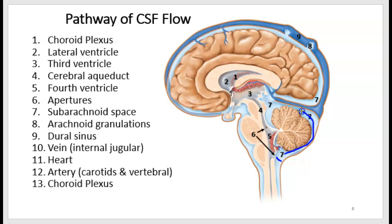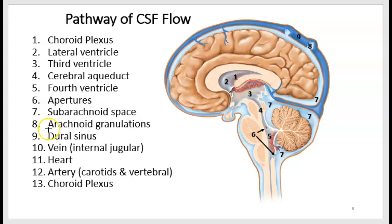Now CSF moves within the subarachnoid space and finds openings into the vein called arachnoid granulations. The CSF has been between the pia mater and the arachnoid mater, and now it punctures the arachnoid mater and gets into a dural space. When it does so, it encounters venous blood and eventually will return to the heart, proceed to the lungs, be oxygenated, and then be pumped back by the heart into the arteries.